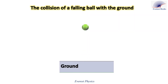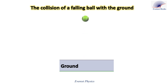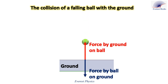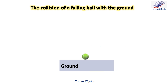Why does a falling ball bounce back up when it collides with the ground? As the ball crashes into the ground, it exerts a downward force on it. According to Newton's third law, the ground simultaneously exerts an equal and opposite force pushing the ball back up.